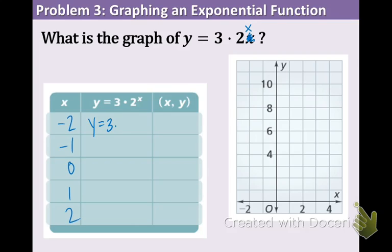Which means we are doing 3 times 1 over 2 to the 2nd. Which means 3 times 1 fourth. Lastly, we know that that number is 3 fourths. So the coordinate point is going to be negative 2, 3 fourths.